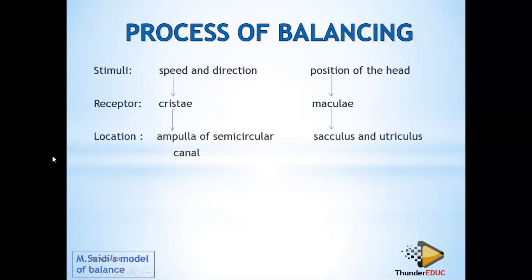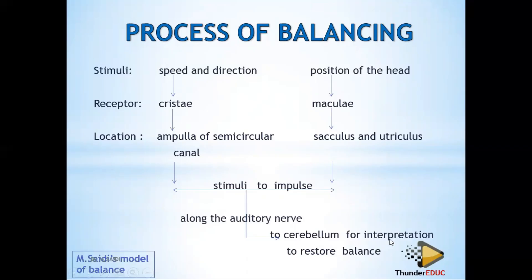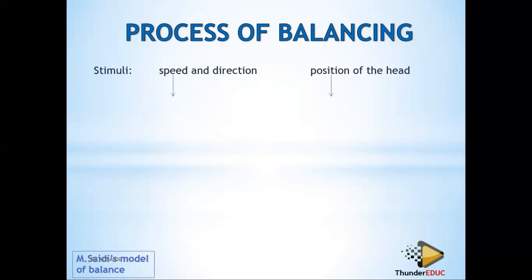You need to know the location of these receptors — the cristae are located in the ampulla of the semicircular canal, and the maculae are located in the saccular and utriculars. When they change the stimulus into an impulse, it is sent to the brain. The hearing signal goes to the cerebrum for interpretation.